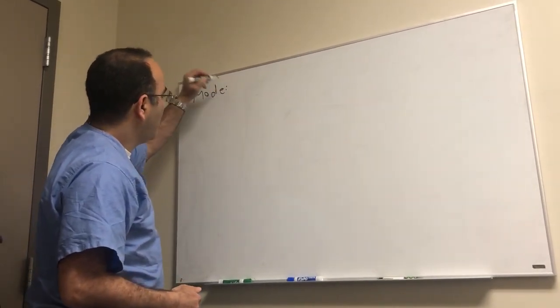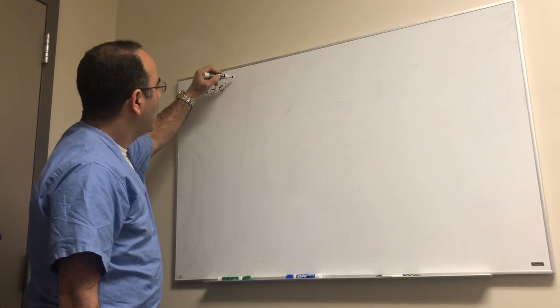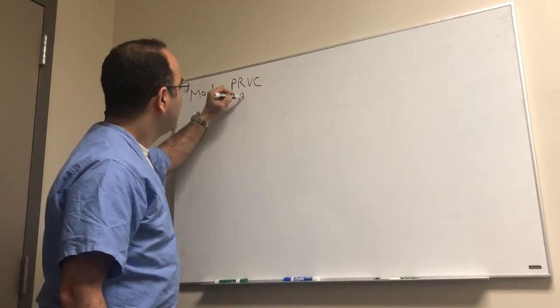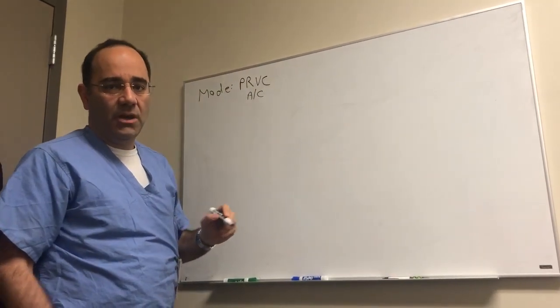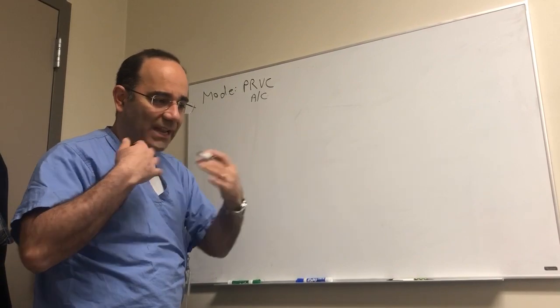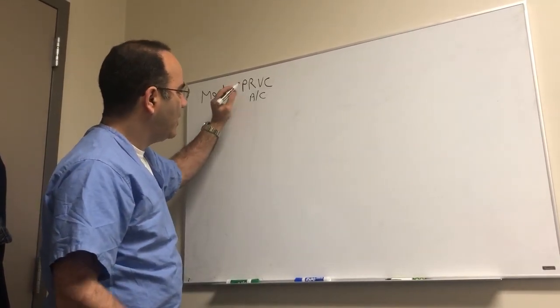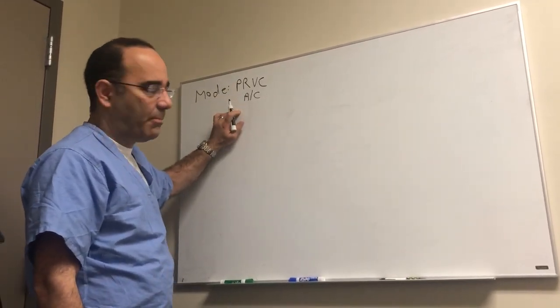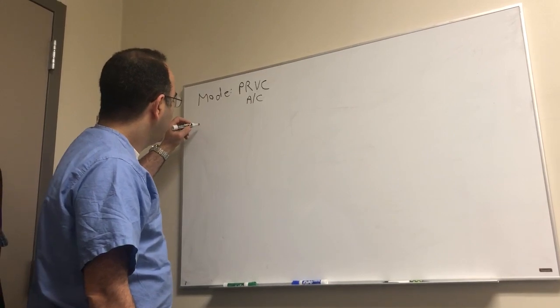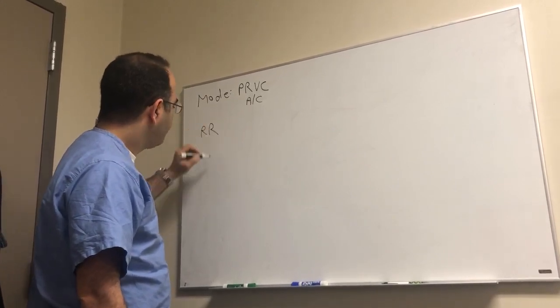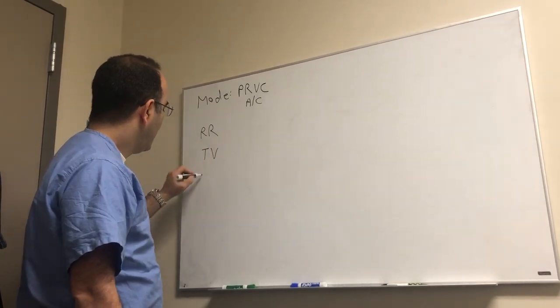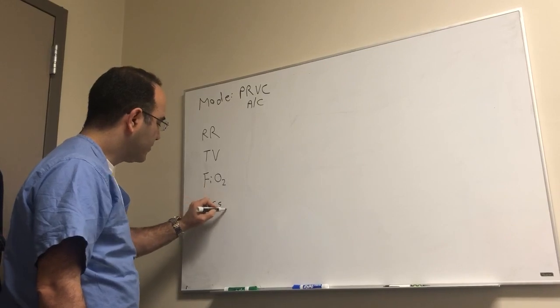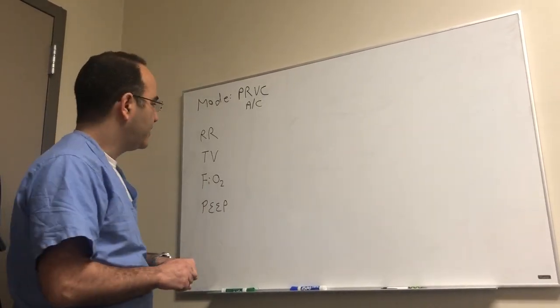Within volume control, there are a couple of things you have to dial in. First is the mode. We're going to talk about what we refer to at George Washington as PRVC, which is really the same thing as assist control with variable gas flow. In other words, how fast the person is able to inhale varies in a PRVC mode. The next knob you're going to have to tinker with is the respiratory rate, then the tidal volume, then the FiO2, and lastly the PEEP. Those are the main variables you have to dial into the ventilator.